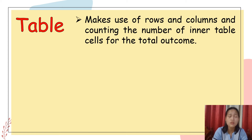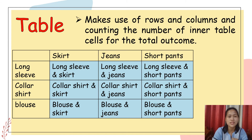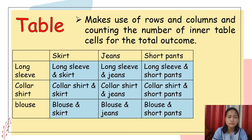Using the table with rows and columns, it's up to you where to place the bottoms or the tops, as long as we have the same number of inner cells. As you can see on the table, all the possible outfits are seen in the cells colored blue. We still have the same answer — there are nine possible outfits.